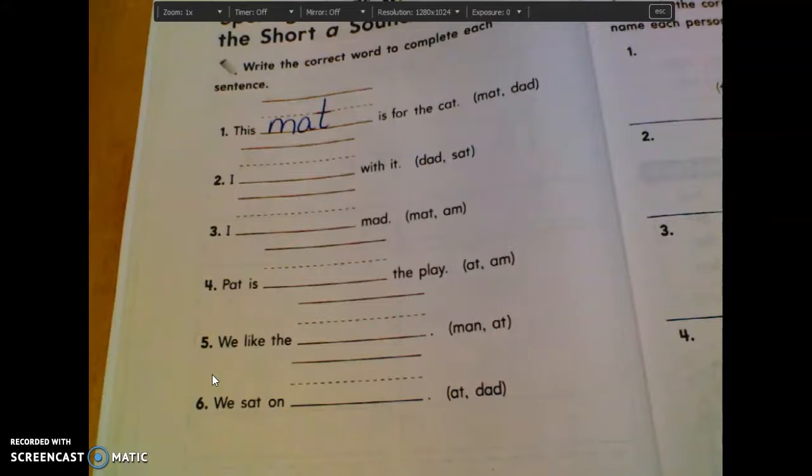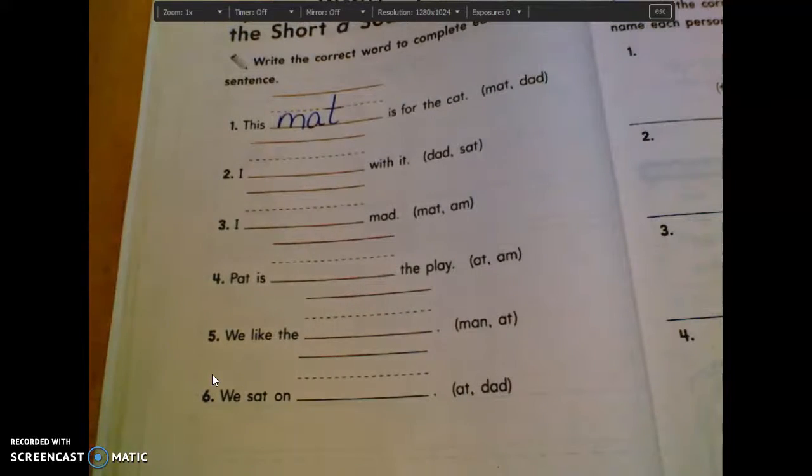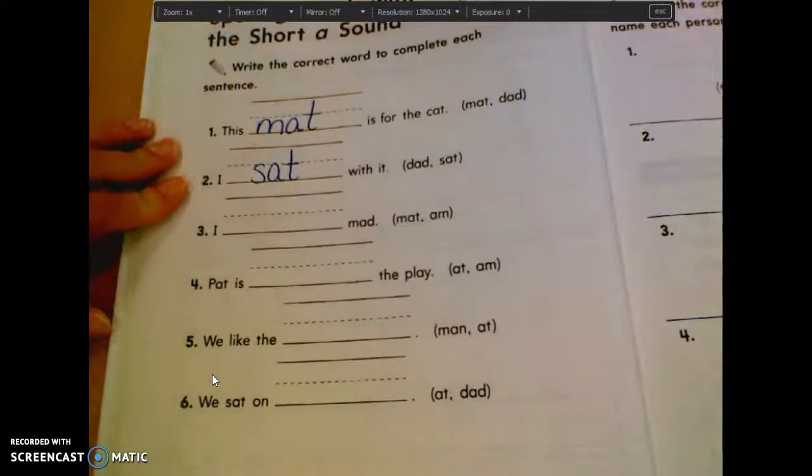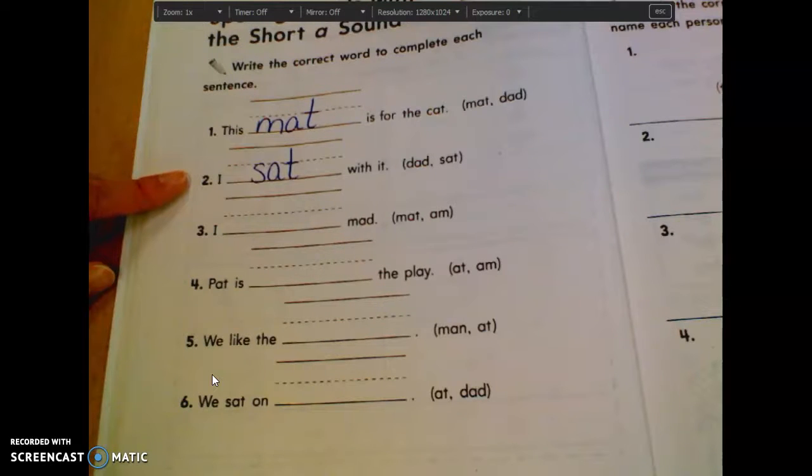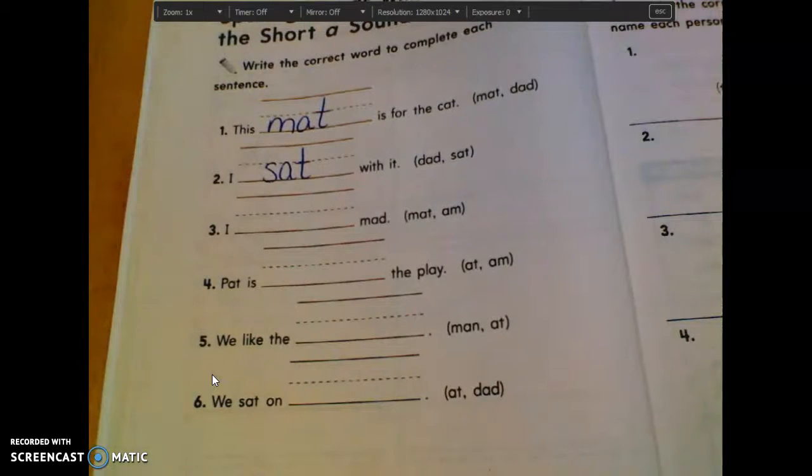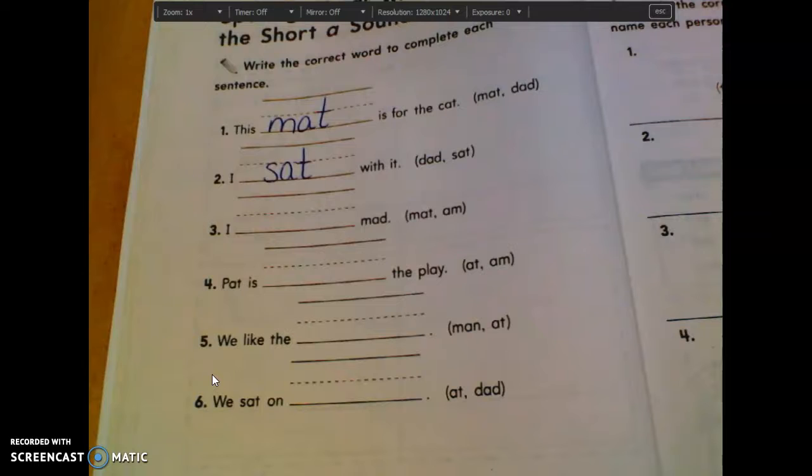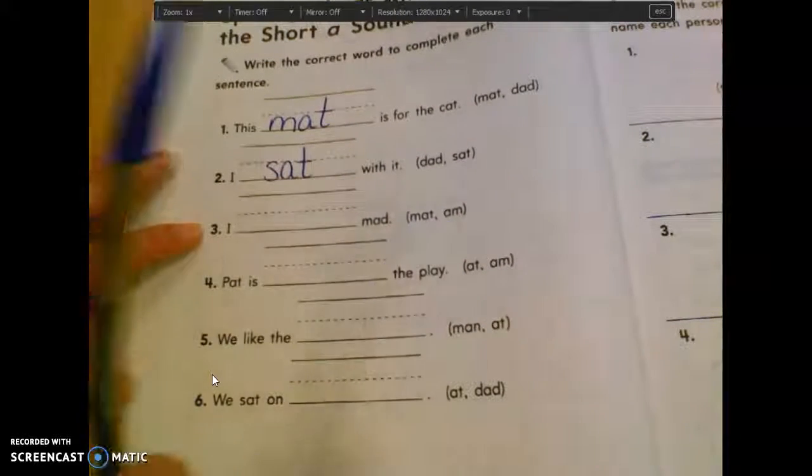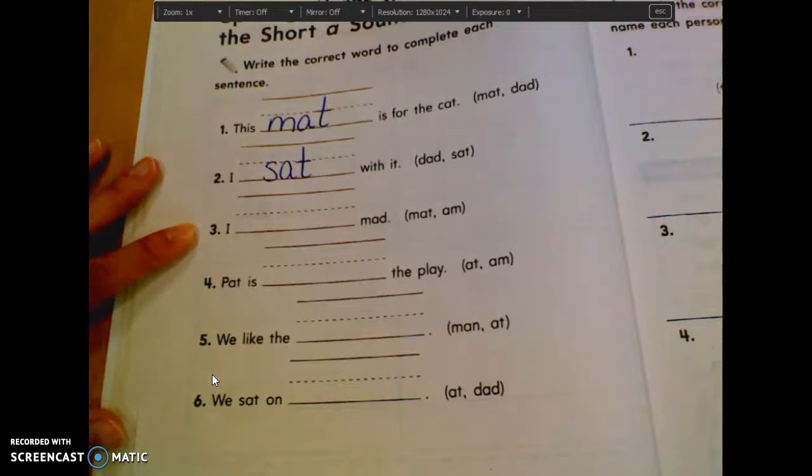So number one, you're writing the word Matt. Number two, I blank with it. Dad or sat? This word makes sense in there. Parker? I sat with it. S-A-T. Sat. So we've got number one and number two. Good, that, right here, that, just like I have up on the board. Number three says, I blank mad, Matt or am? Caitlin, am, I am mad.